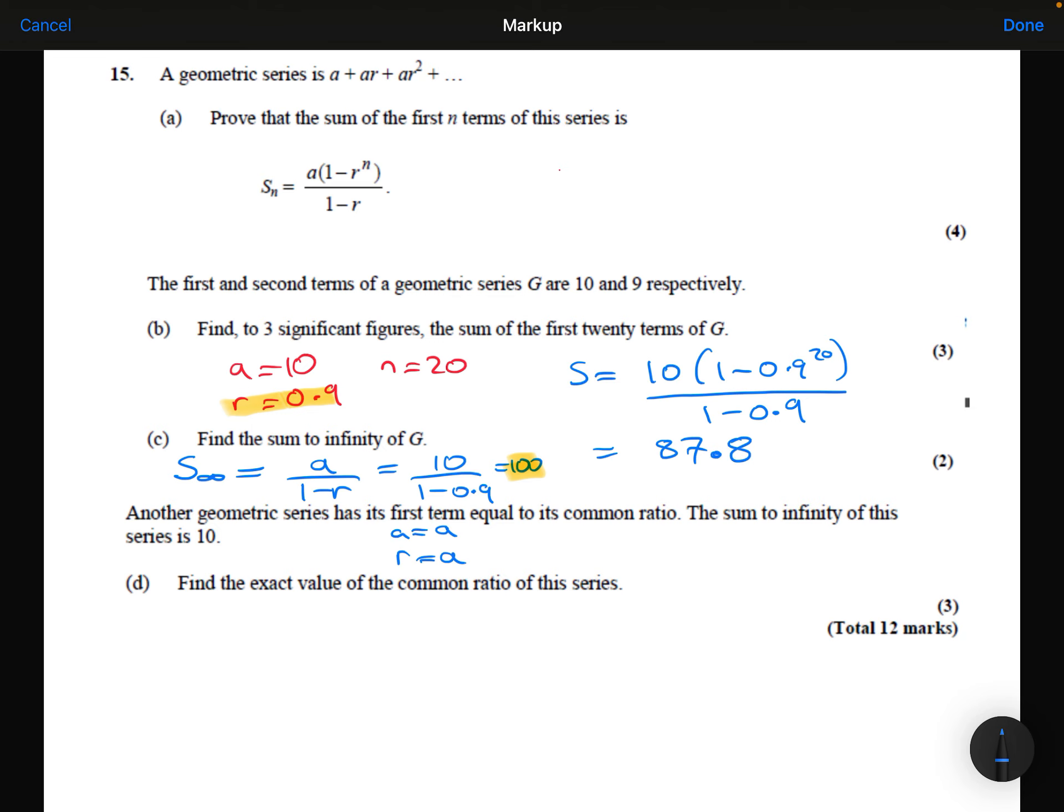So the sum to infinity formula, then, would be A over (1 minus A), which is equal to 10. So rearranging this, multiplying both sides by the (1 minus A).